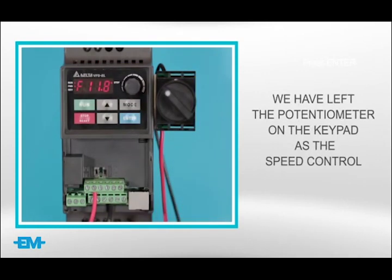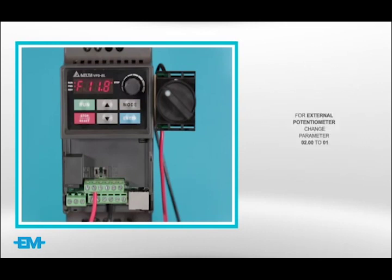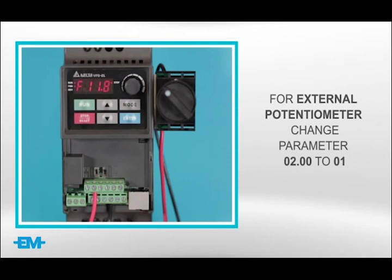We have left the potentiometer on the keypad as your speed control. There is an option to use external potentiometer. Please refer to the manual parameter 02.00, which you would change to 1 for a 5 kilo ohm external potentiometer.